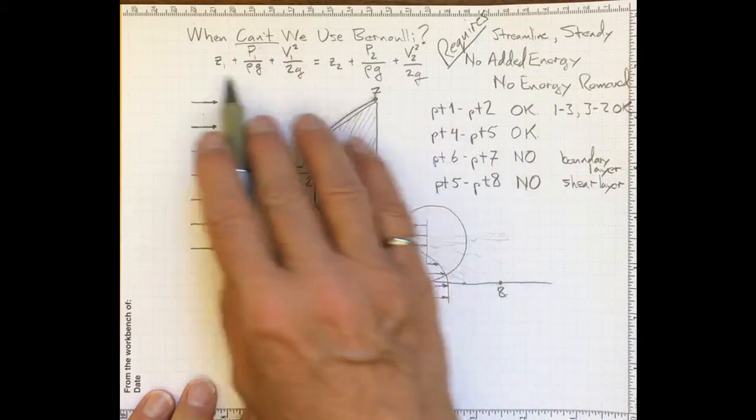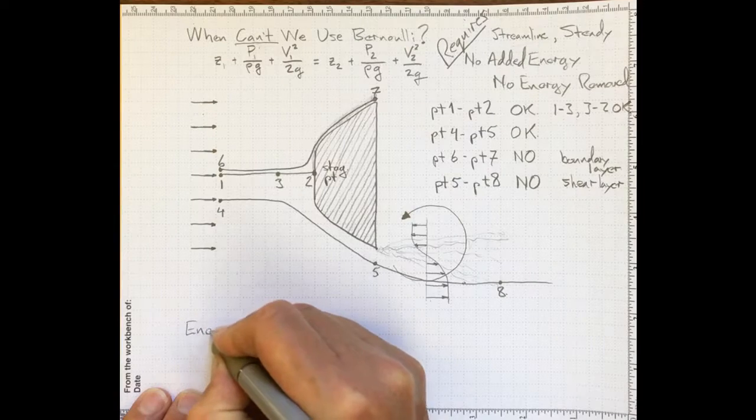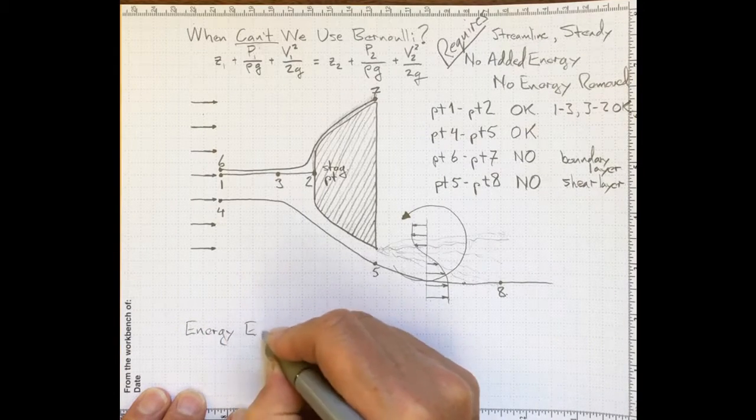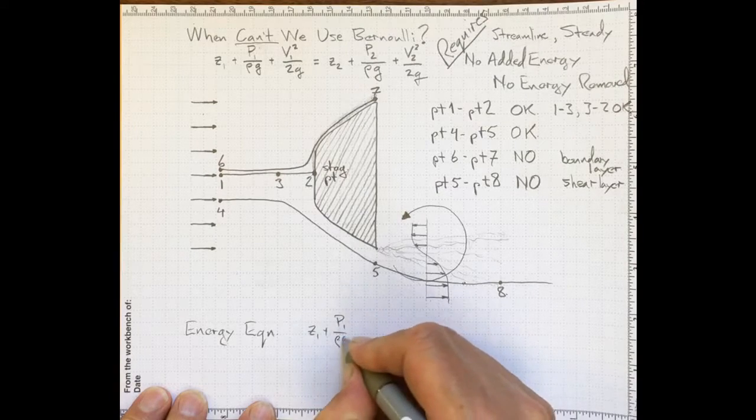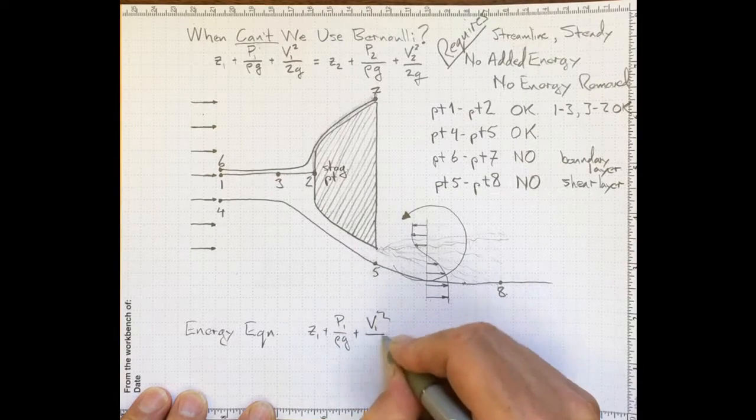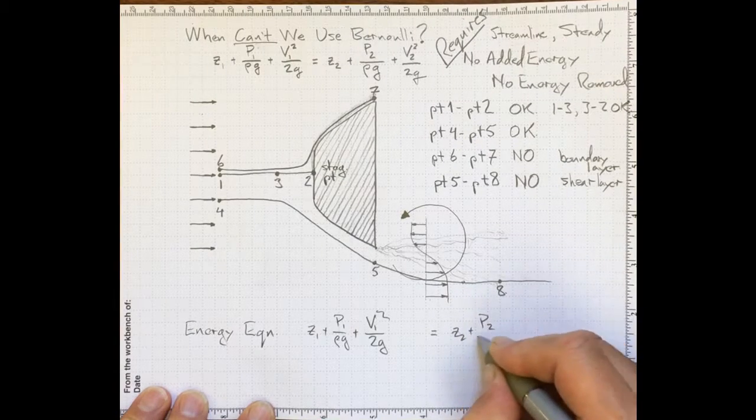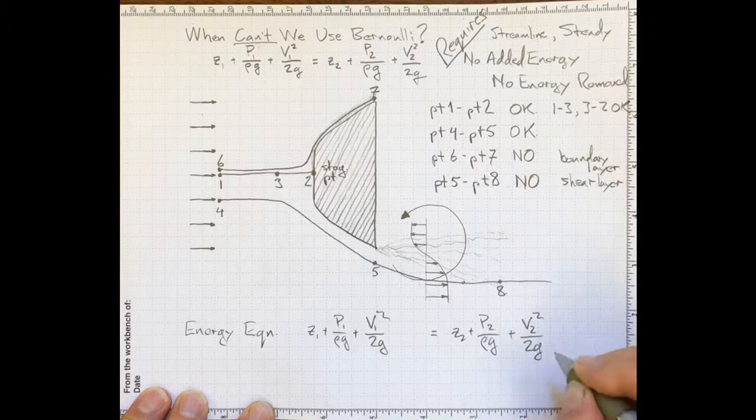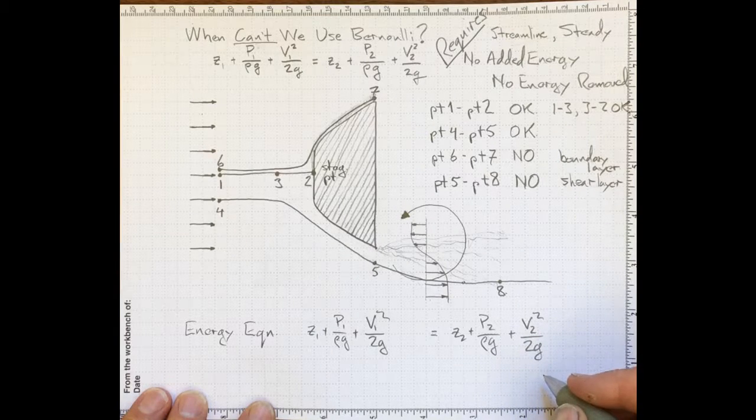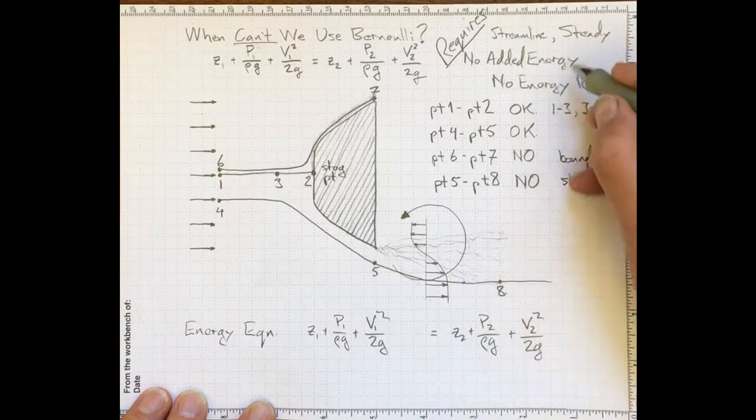If we wanted to have a better arrangement, we could go from the ideal Bernoulli's equation to an energy equation at each location. It has all the same terms, and in addition,